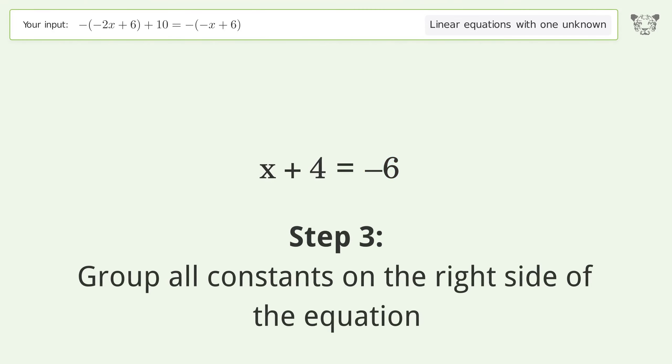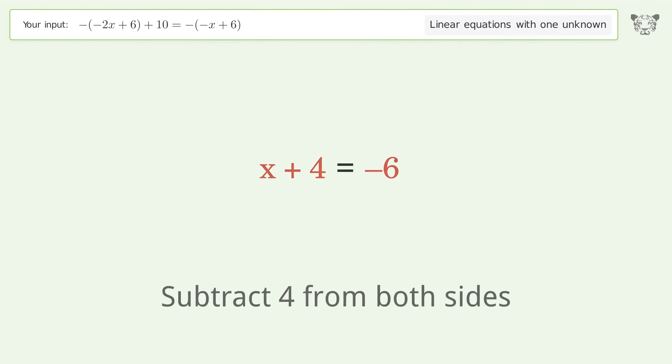Group all constants on the right side of the equation. Subtract 4 from both sides.